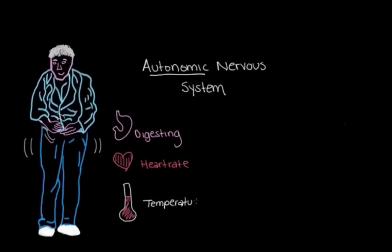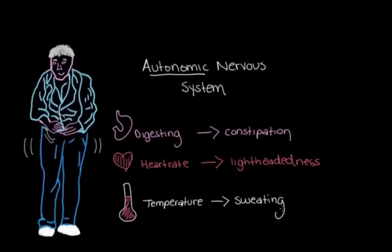So when these neurons stop talking properly, when they start having trouble with the telephone game, the person with Parkinson's disease may experience things like constipation, because they're not digesting their food very well, or lightheadedness when they stand up, because their heart rate is not really changing to account for them sitting down or standing up. Or maybe they'll find that they're sweating a lot. And that's because their body isn't regulating their temperature properly.